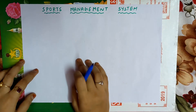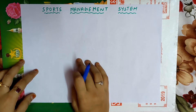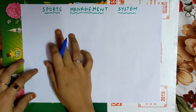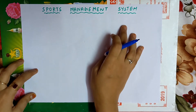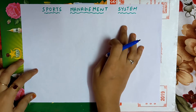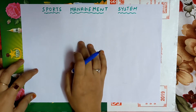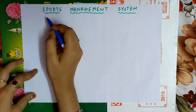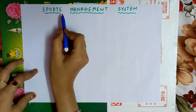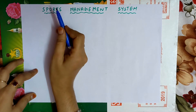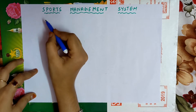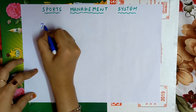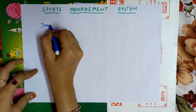In this video, let us learn to draw an ER diagram for the topic sports management system. The first step is to identify the entities. The first entity can be team — when it comes to sports, definitely a team of players is required, so team is an entity.